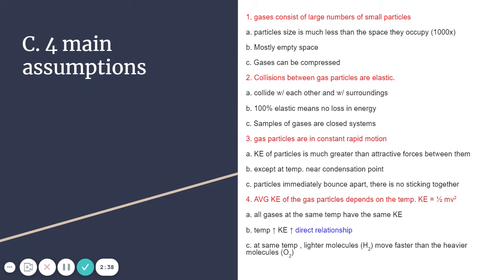Collisions between gas particles are elastic. What that means is that they're going to hit each other, and they're going to hit their surroundings, and they're going to bounce off. We make an assumption that there's 100% elasticity, which means no loss in energy. We know that that's not exactly true. Every time they hit each other, or they hit something else, a little bit of energy is lost, maybe in the form of heat. So assuming that there's 100% elasticity isn't quite correct, but that is an assumption that we make.